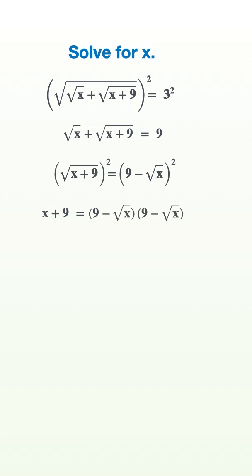Now we expand the expression on the right. The product of the first is 81, the products of the outer and inner are each negative 9 times the square root of x, and the product of the last is positive x.